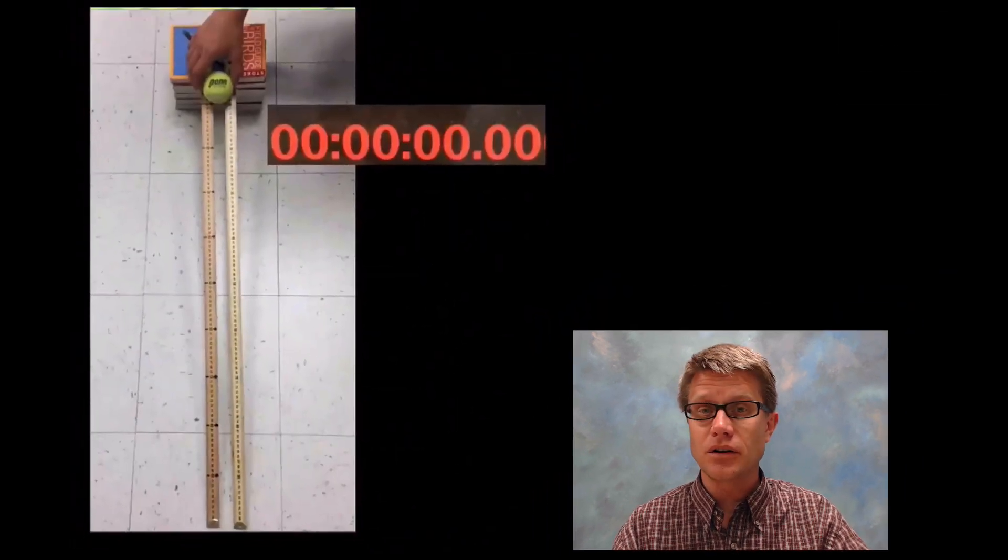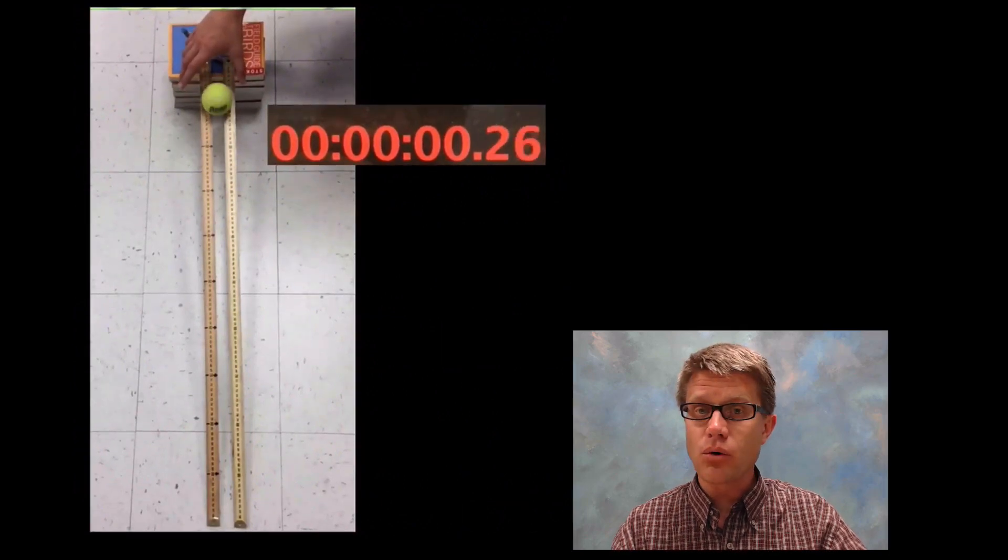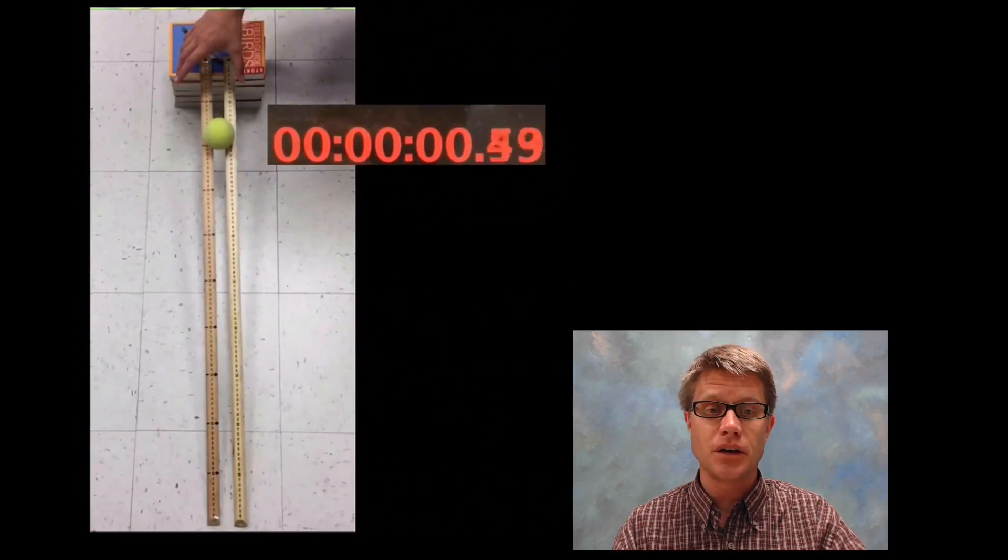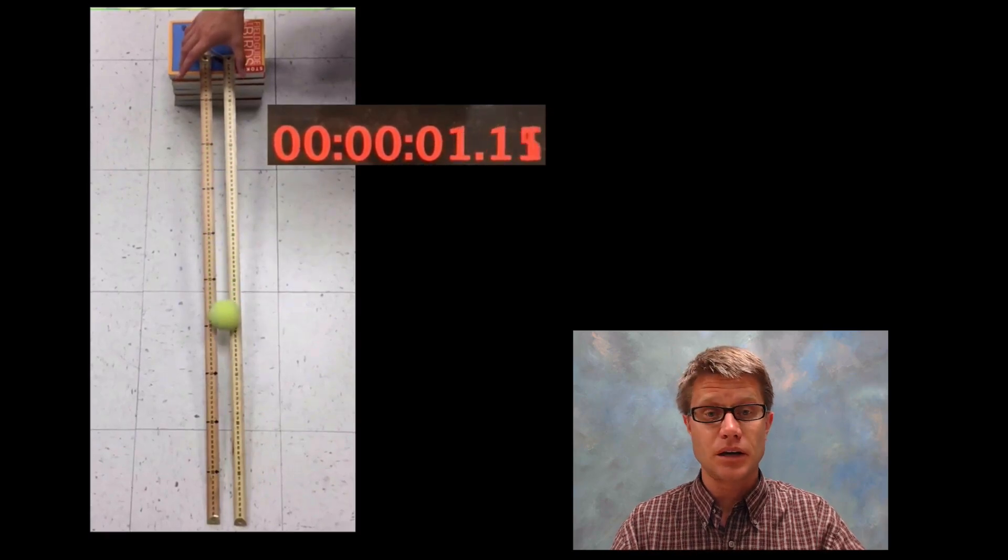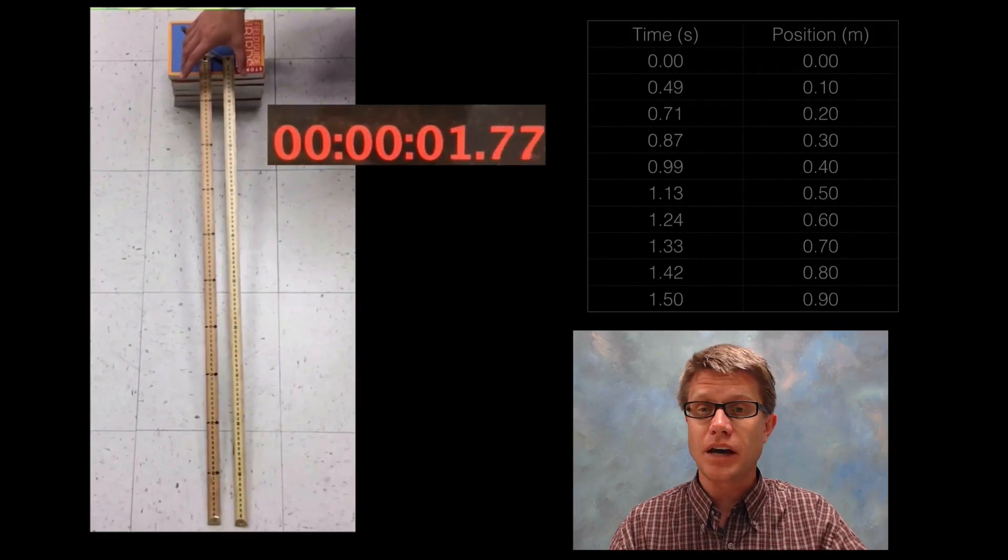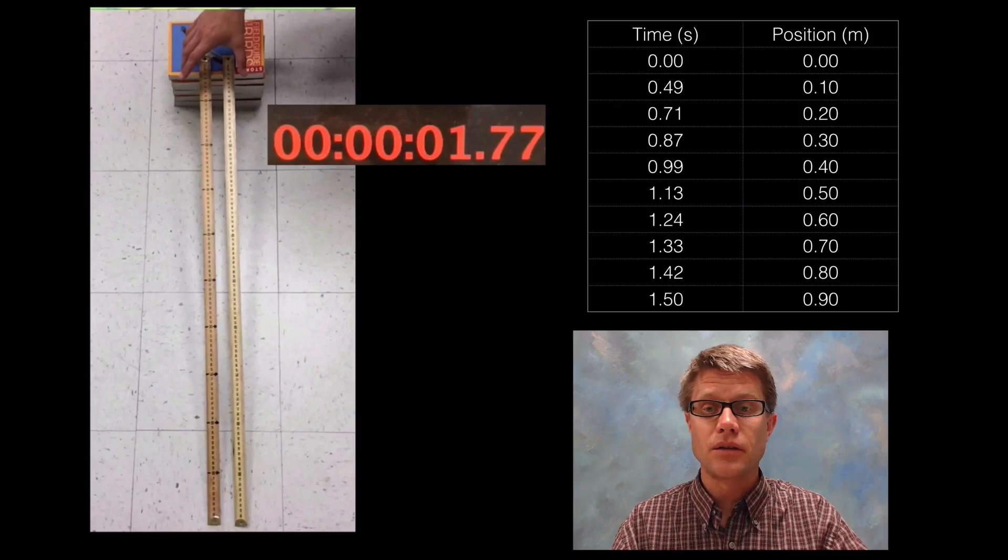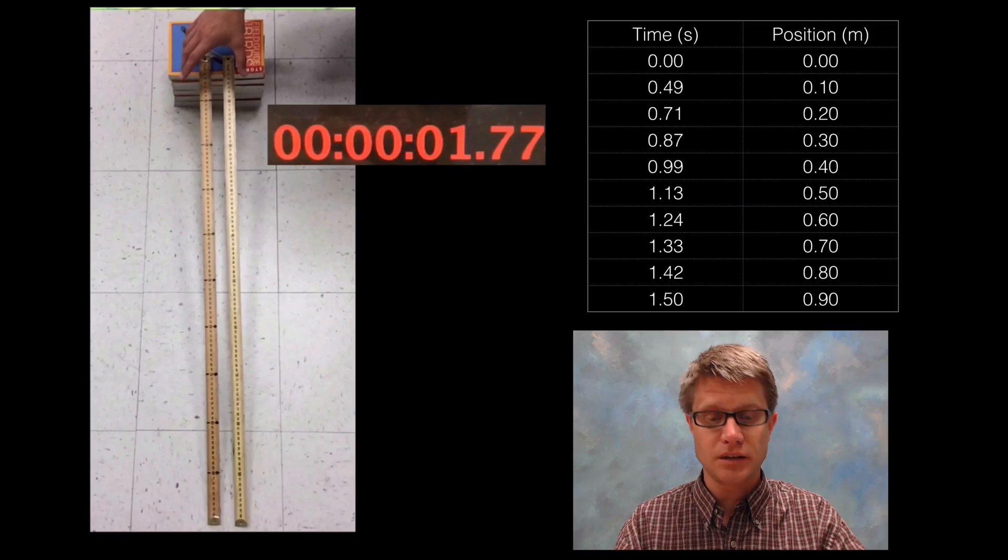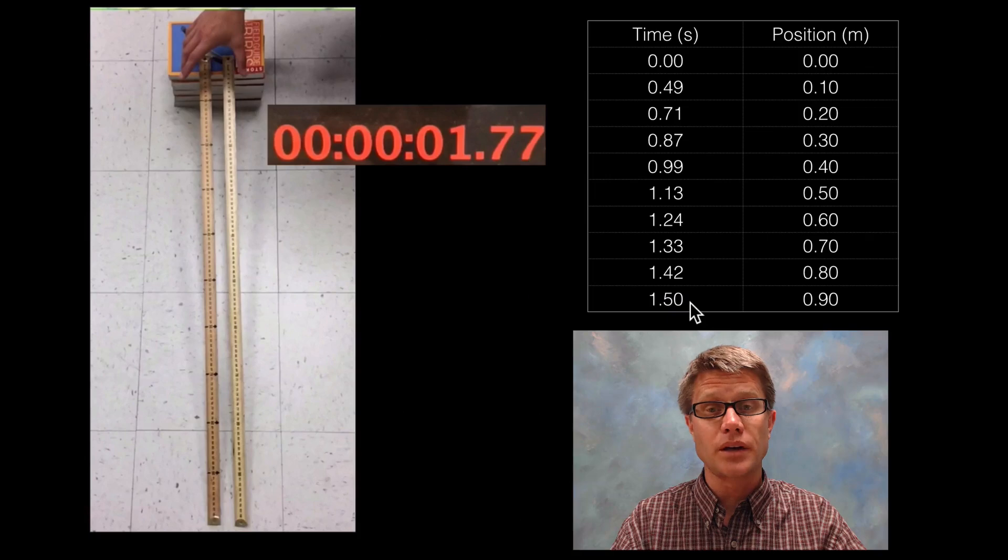I've got some data here starting at position zero at time zero. I recorded where the ball was at each of these different positions by slowing down the video. I've got time on the left side and position on the right, which consistently goes up by 0.1 meters every time, but the time is varying. It takes about half a second to make it to the first 10 centimeters, but the whole thing takes one and a half seconds, so it's clearly accelerating over time.